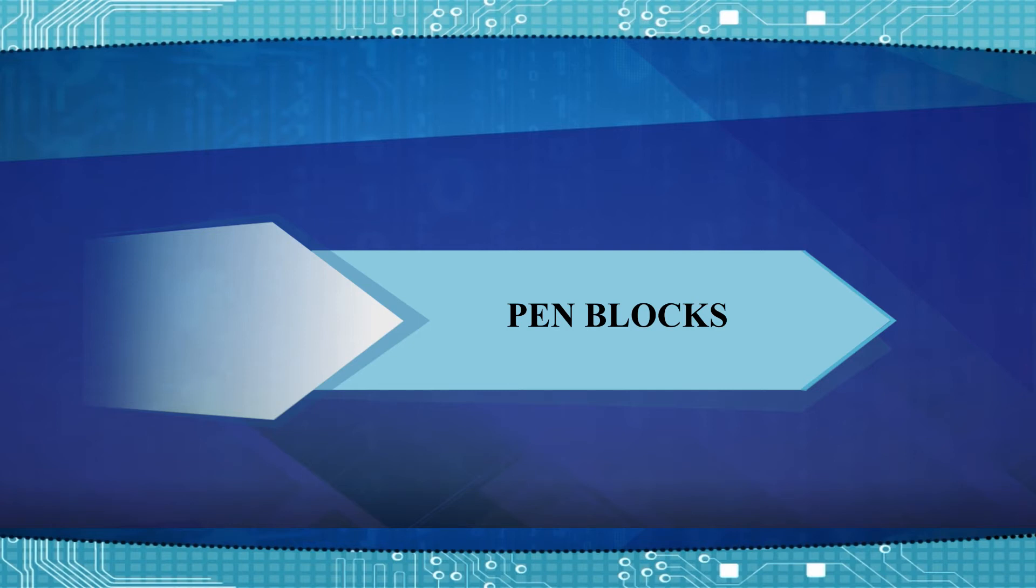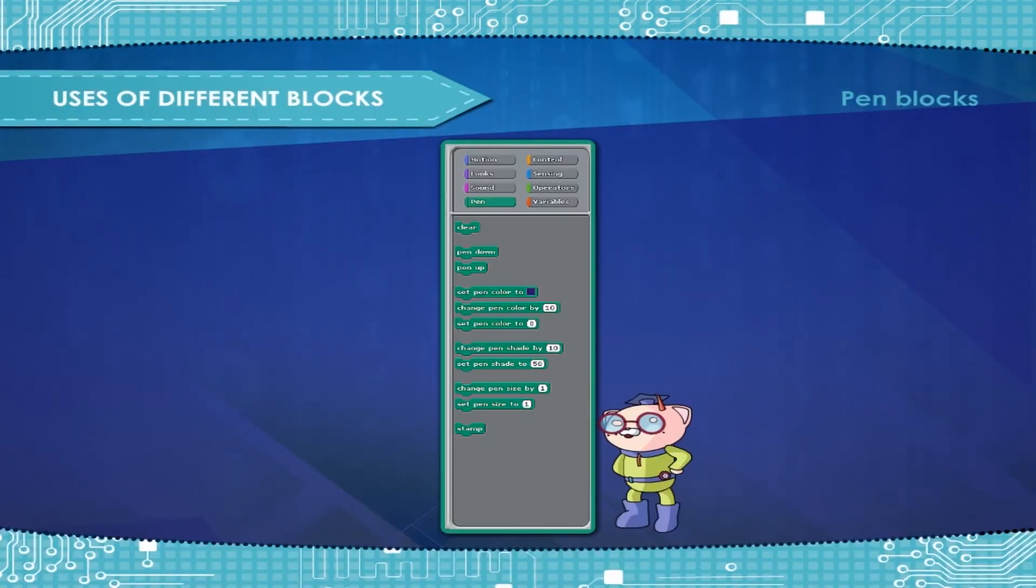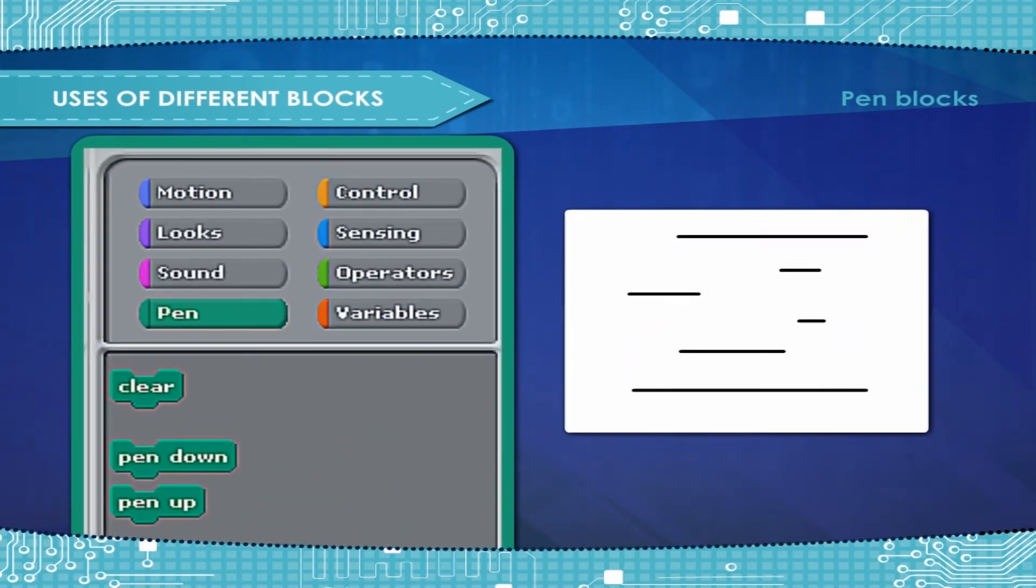Pen blocks are the blocks that control the pen. Scratch has many pen stack blocks. Clear removes all pen marks put on the screen.